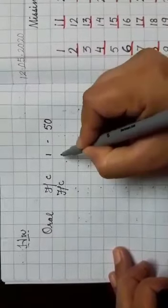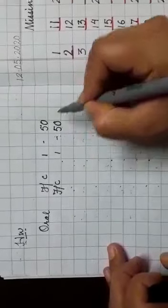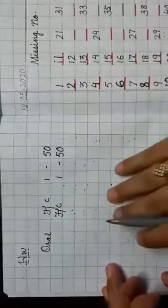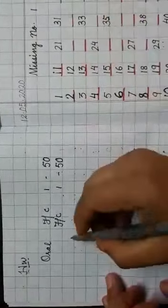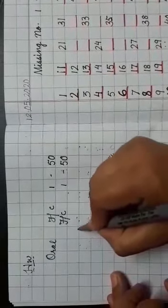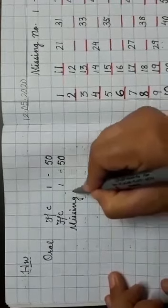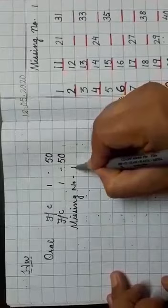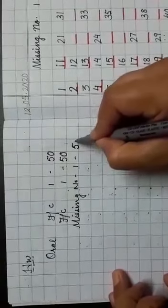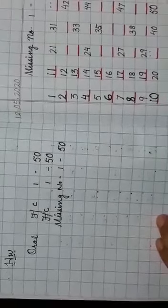Then written forward counting, write 1 to 50. Then say to your mother that she will help you out to make the missing number, the format of missing number 1 to 50.